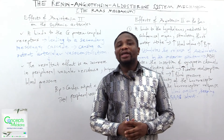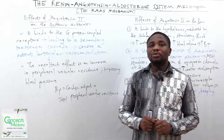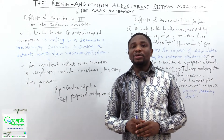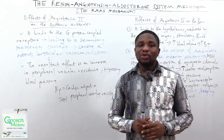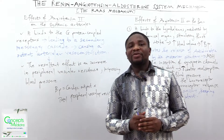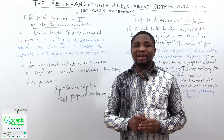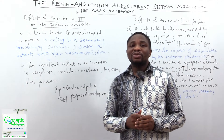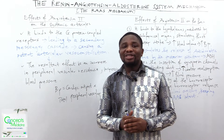Angiotensin-2 binds to G-protein coupled receptors on the systemic arterioles, leading to a secondary messenger cascade causing potent arteriolar vasoconstriction. This increases peripheral vascular resistance, which increases blood pressure — because blood pressure equals cardiac output times total peripheral vascular resistance. As peripheral vascular resistance increases, blood pressure increases.